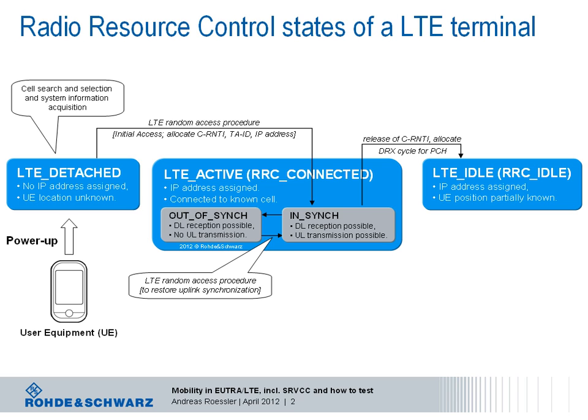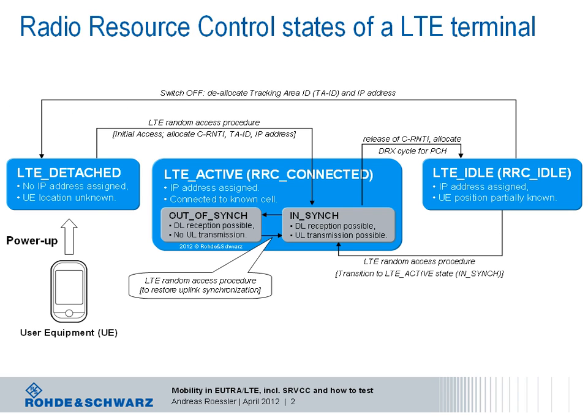That would mean the device would monitor only every 2.56 seconds the PDCCH for any incoming paging message. A bunch of other parameters and events are influencing the cycle even further. For further information on discontinuous reception, please study technical specification 36.321, defining the medium access protocol for LTE. To move into an active in-sync state again, the device uses another time the random access procedure.